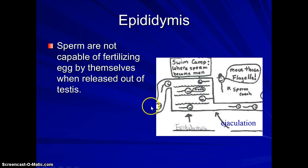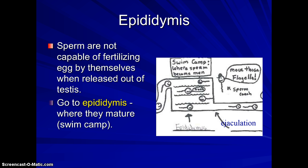The epididymis is where the sperm will travel once they are produced by the testes. Sperm taken directly from the testes are not capable of fertilizing an egg. So they go to the epididymis — I call this the sperm swim camp — where they mature and become more capable of swimming. They will stay in the epididymis until ejaculation occurs.